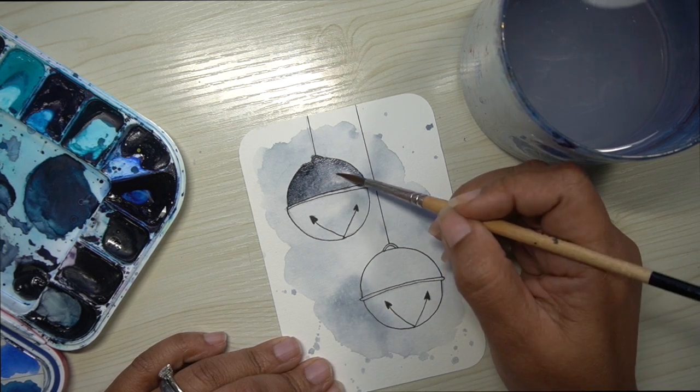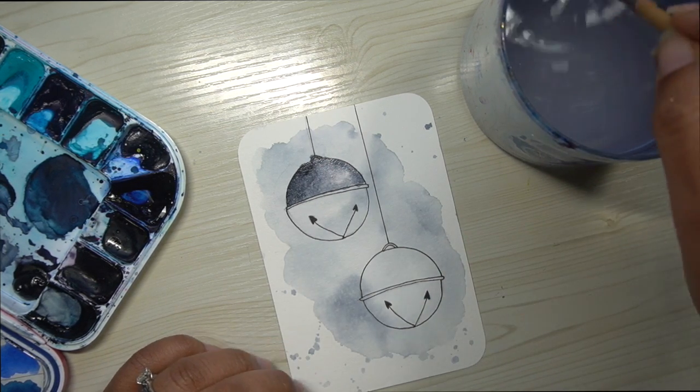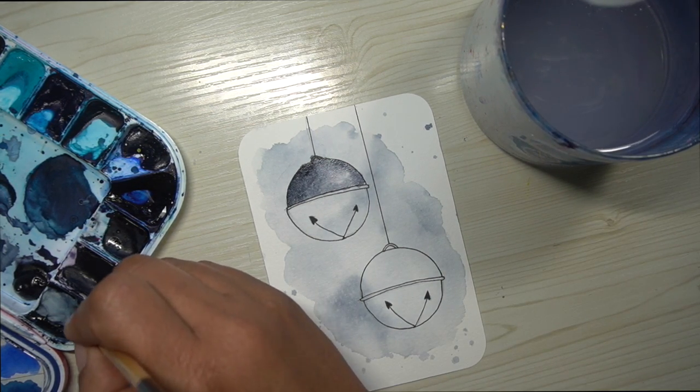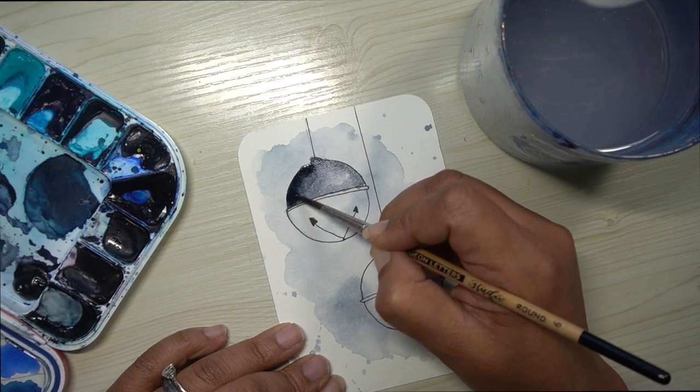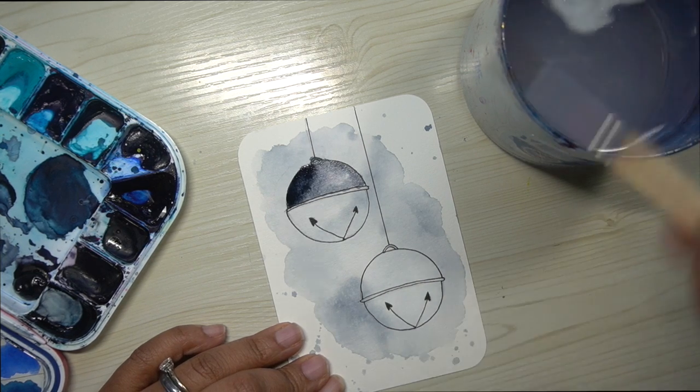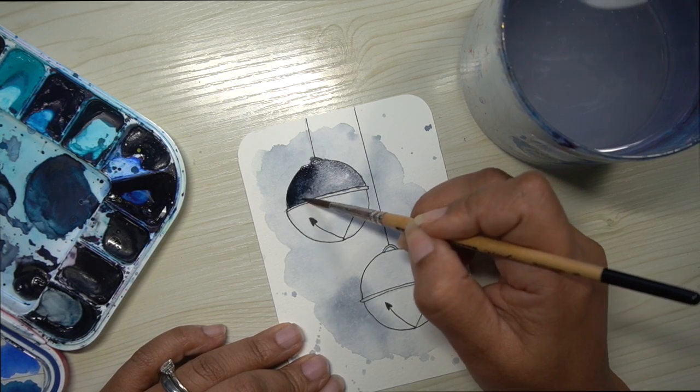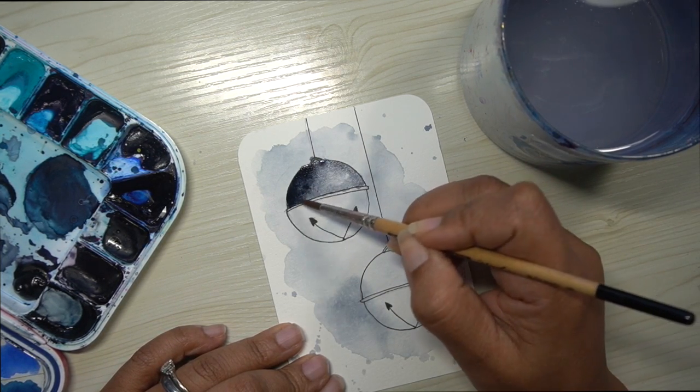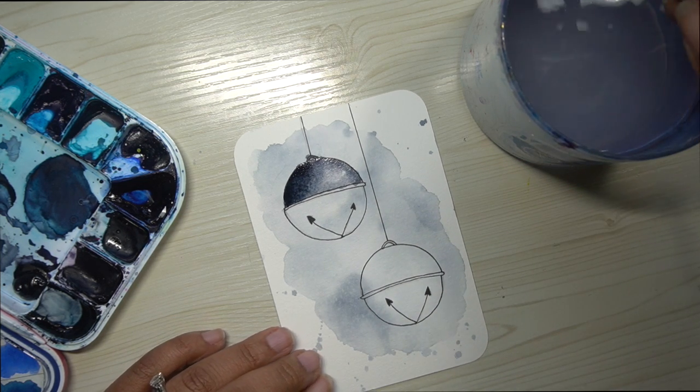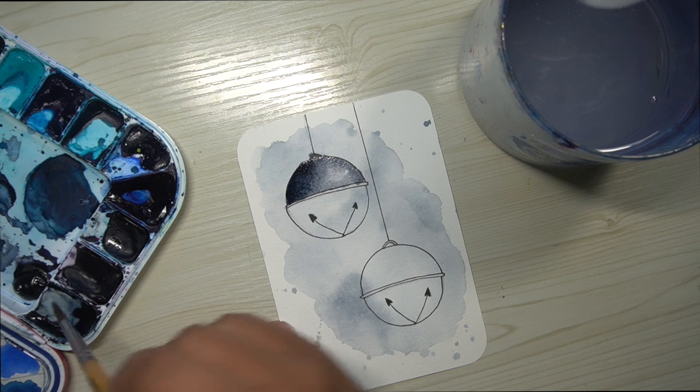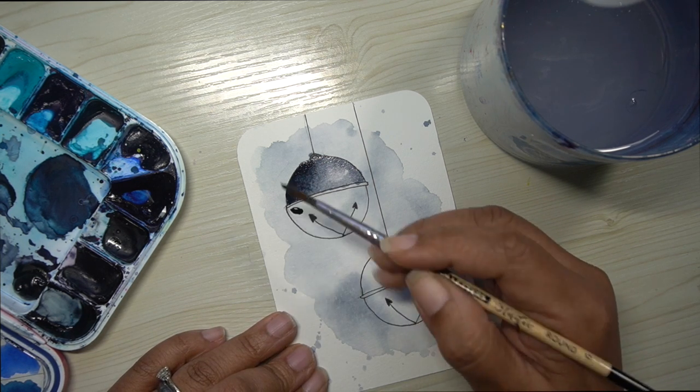Now, after we do the top, we are going to do the same thing to the bottom of the same jingle bell. And again, you'll see here that I'm just darkening up a little bit because I dragged too much color to the other side. So I'm adding in a little bit more of the Payne's gray to the left side before moving on to the bottom.